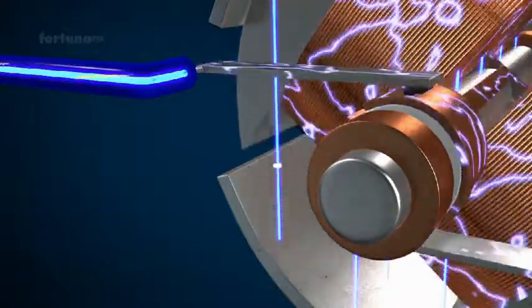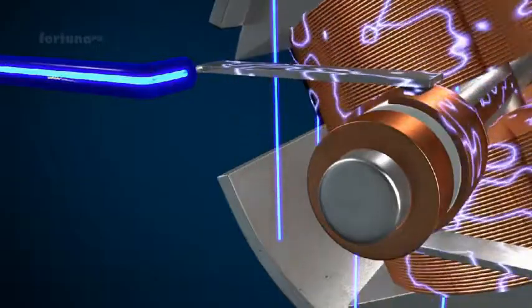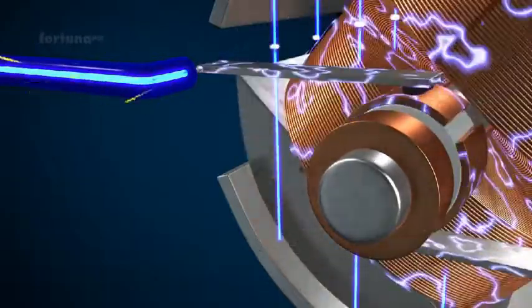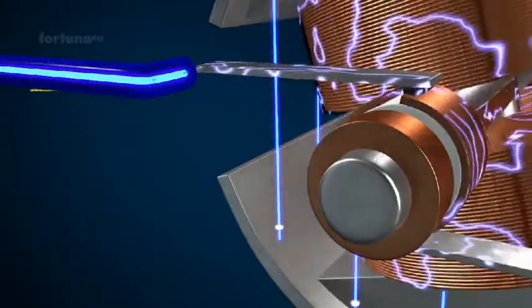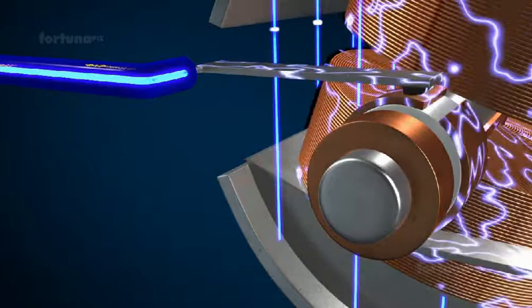These actions are continually repeated, thereby rotating the armature in one direction. The rotational motion of the armature is transferred to a mechanical device through the shaft, thus generating a mechanical motion.